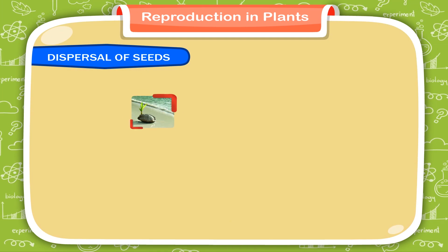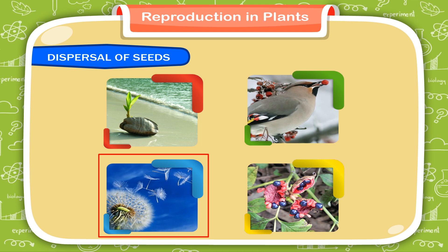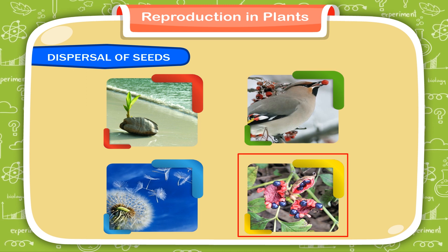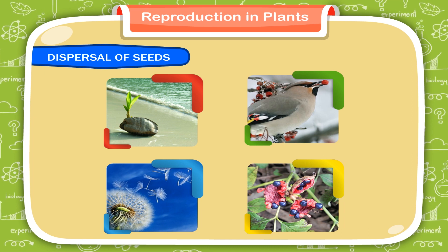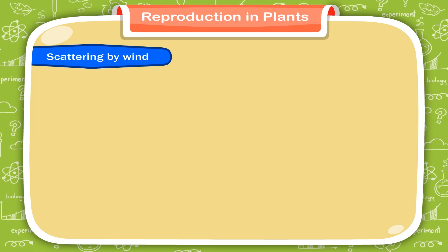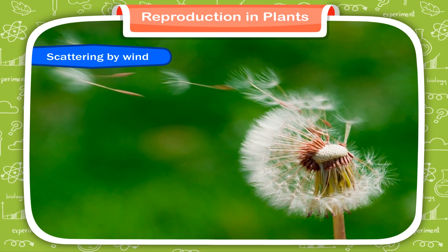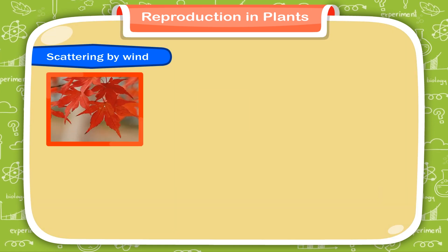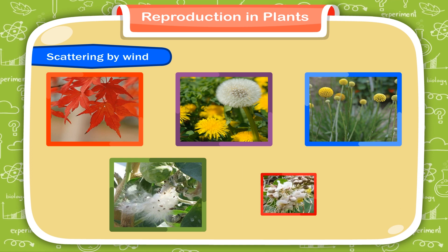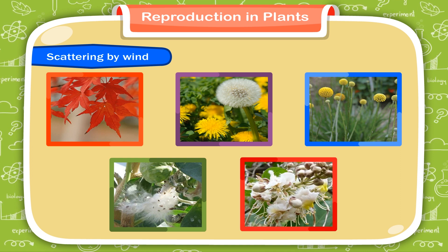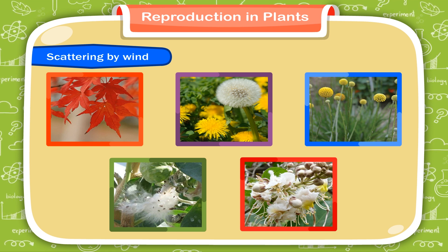Dispersal of seeds happens in four ways: through water, wind, animals, and explosion of the fruit. These are known as agents of dispersal. Scattering by wind: some seeds have long and fine hair on them. Seeds like maple, dandelion, drumstick, madar and hiptage have wings or tufts of hair on them. These hair or wings help them to float in the wind.